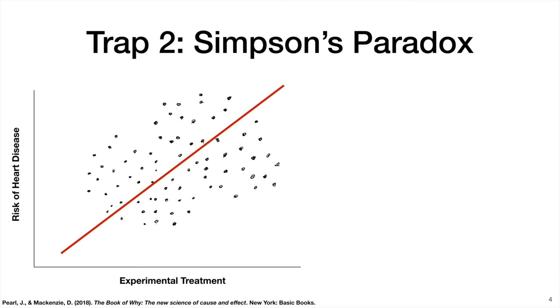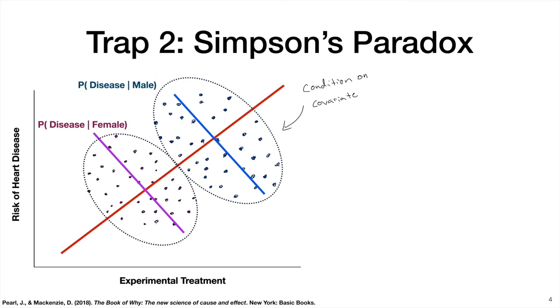However, trap number two is less well known, and this is Simpson's Paradox, which basically highlights that how you look at your data matters. So let's imagine we do a study for an experimental treatment for heart disease, and we collect a bunch of data, and we plot it. So on the x-axis, we have our experimental treatment. This could be a drug or behavioral protocol. The y-axis, we have risk of heart disease. And if we look at the plot, we would say to ourselves, this is a terrible treatment for heart disease. It seems the more treatment someone gets, the higher the risk of heart disease. However, if we were to look at two subpopulations, say men and women, we would get the exact opposite effect.